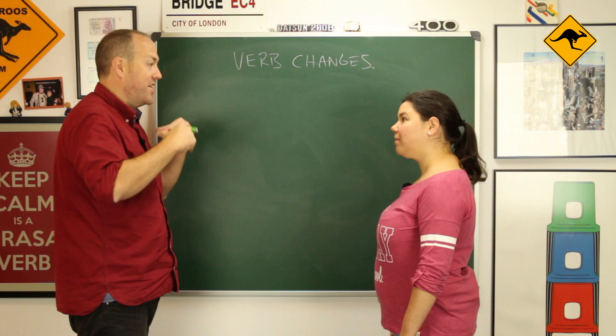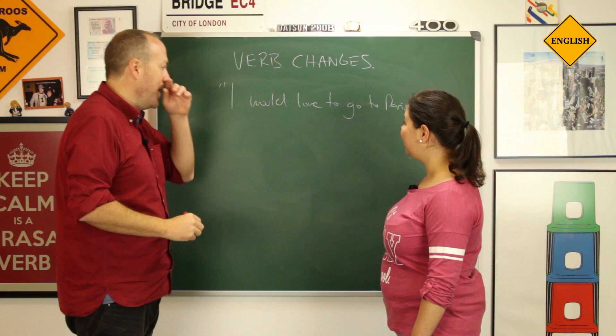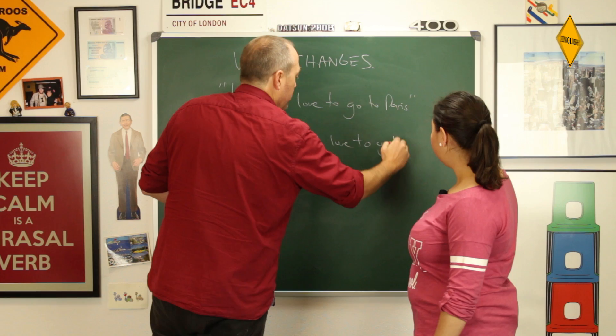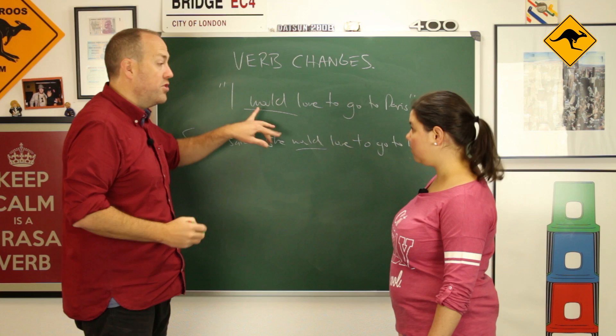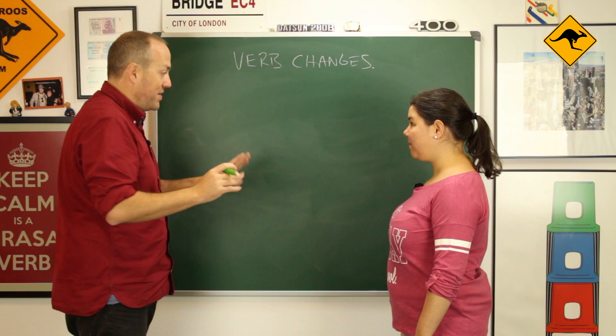What about if we use a conditional? For example: 'I would love to go to Paris.' In this case, we would say: Sonia said she would love to go to Paris. We know in English that the conditional 'would' has no conjugation because it's a modal — so there's only one possibility. Easy.